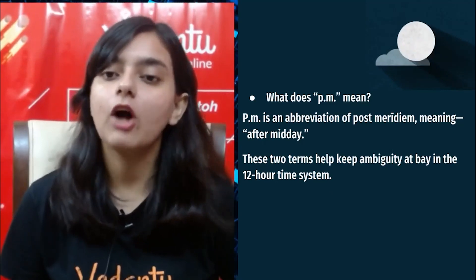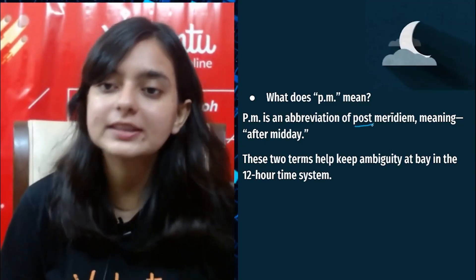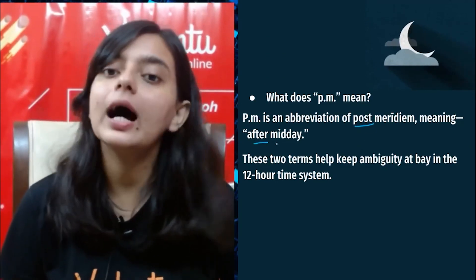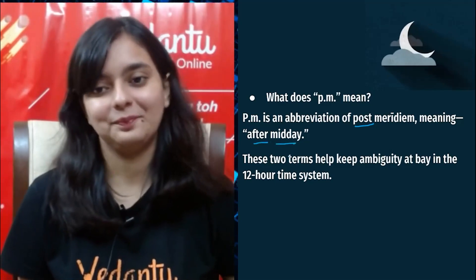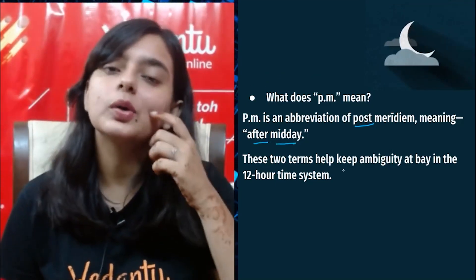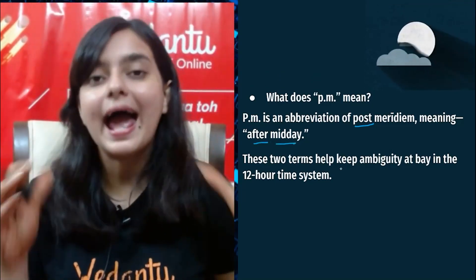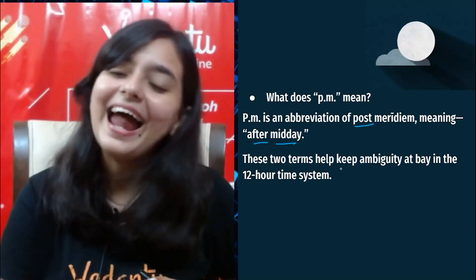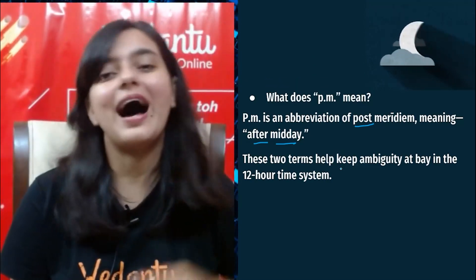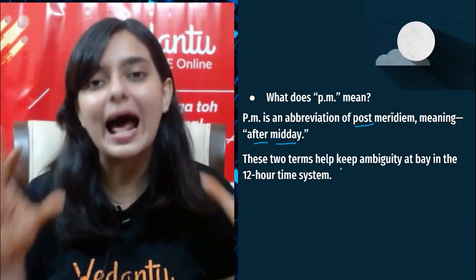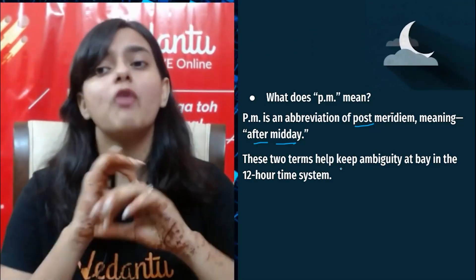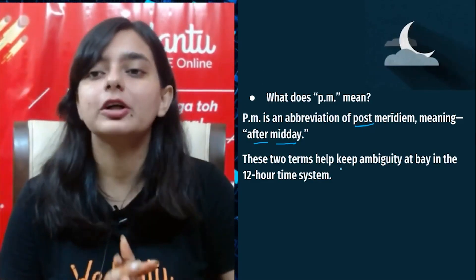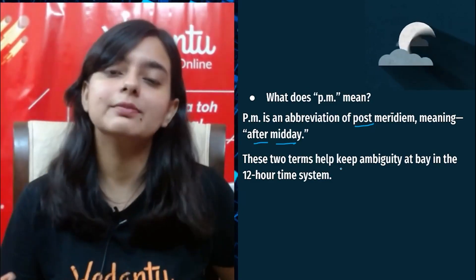PM is the abbreviation of post meridiem, which means 'after midday.' These two terms help keep ambiguity at bay in the 12-hour time system. For clarification and to avoid any confusion, we always refer to AM and PM when referring to time.